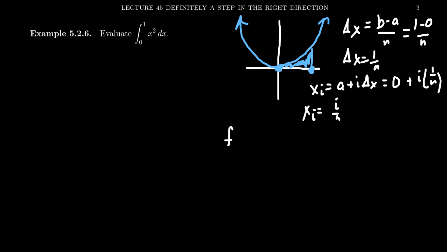It probably goes without saying, but we should mention what the function is. By f of x in this situation, we are describing that quadratic function x squared. And so if we plug in the xi into the squaring function, we end up with i over n quantity squared, which if we square the numerator, we get i squared. If we square the denominator, we get n squared. And so that's our f of xi right there.